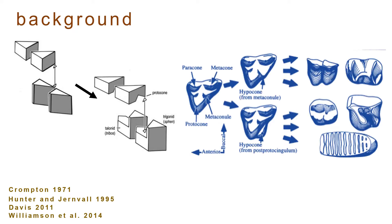For example, the acquisition of a hypocone and the associated increase in occlusal area is touted as a critical evolutionary novelty. Within a clade, this single alteration in cusp morphology is followed by marked increases in species diversification and is regarded as a prerequisite for the diversification and specialization of herbivores.